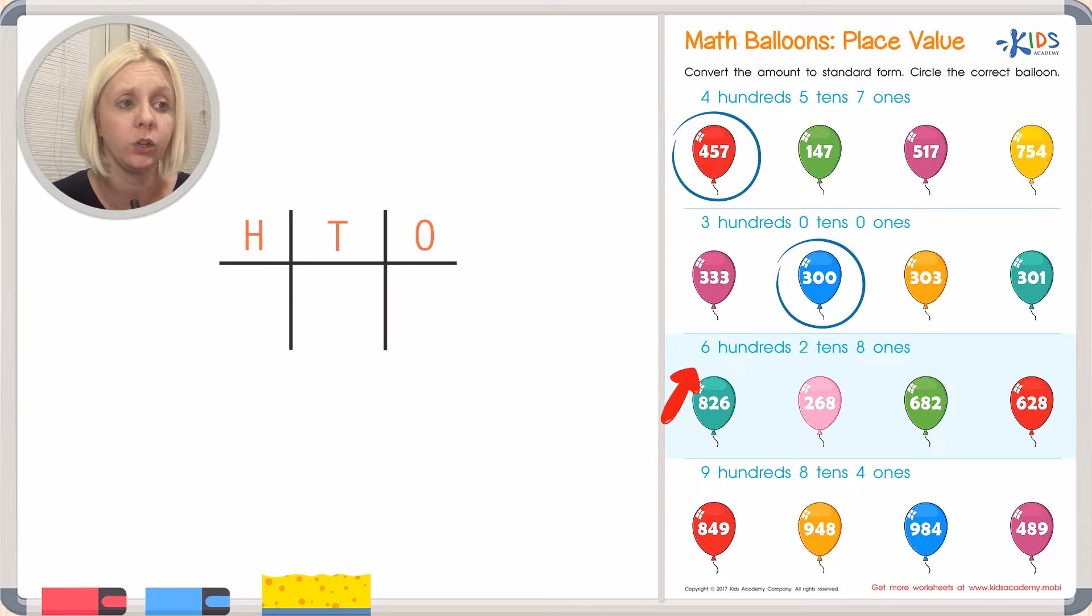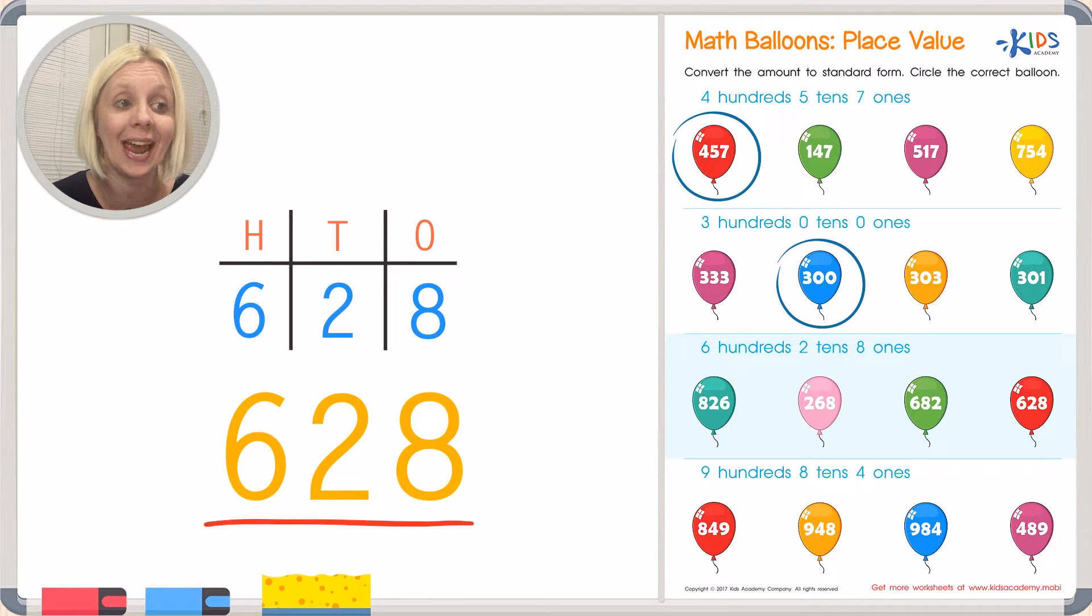So six hundreds. Well, where's the six going to go? Yep. It's going to go right over here in the hundreds place. Very good. Six right here. And then what's the next one say? How many tens are there? There are two tens. So we're going to put two right here in the tens place. And then we've got eight ones. So let's put that all together and let's read it. What does that say? That would be this number right here. And that's going to be six hundred and twenty eight.